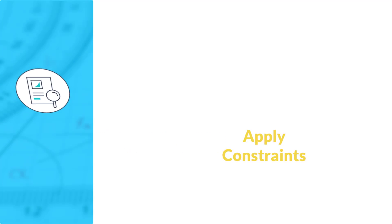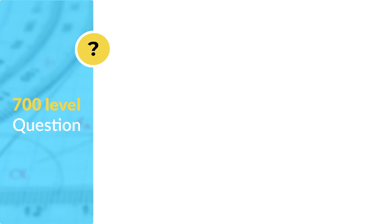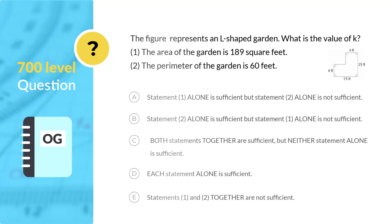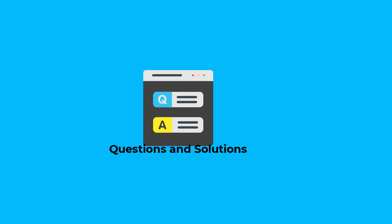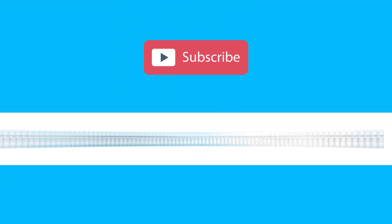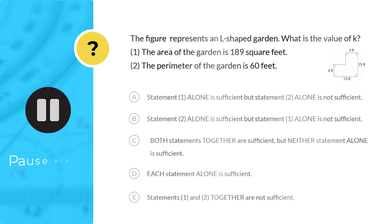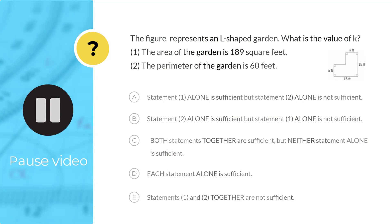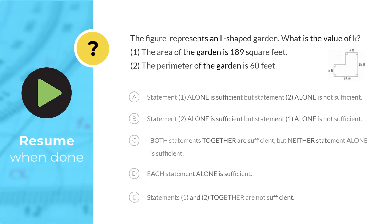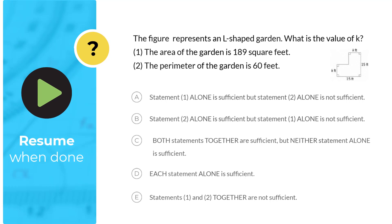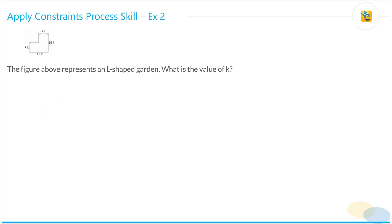Let's apply the constraint process skill on this 700-level geometry question from the official guide. Now pause the video to solve the question, resume when you're done. Let's solve this question.